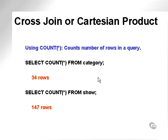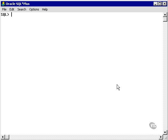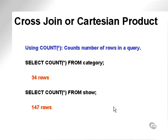Let's take a look at two SELECT statements. I'm going to use a grouping COUNT function — we'll get to grouping functions later on. The COUNT function simply allows me to select everything from a table and count the number of rows selected. It's going to give me a result on the category table of 34 rows and on the show table of 147 rows. Let's verify that. Here are my two COUNT SELECT statements. I'm going to go to SQL+ and paste them in, and I see I have 34 rows in category and 147 rows in the show table.